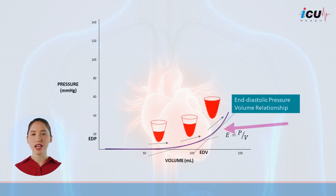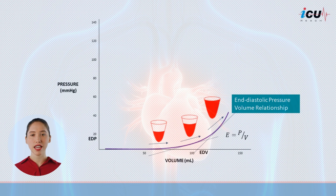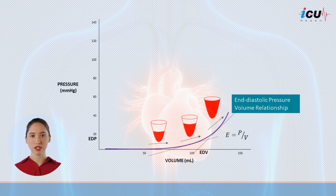However, as filling continues and the end-diastolic volume rises, elastance increases, indicating that the ventricle becomes stiffer and less compliant. This increased elastance during diastole means that the ventricle requires a higher pressure to accommodate additional volume, demonstrating the progressively reduced capacity of the ventricular walls to stretch further.